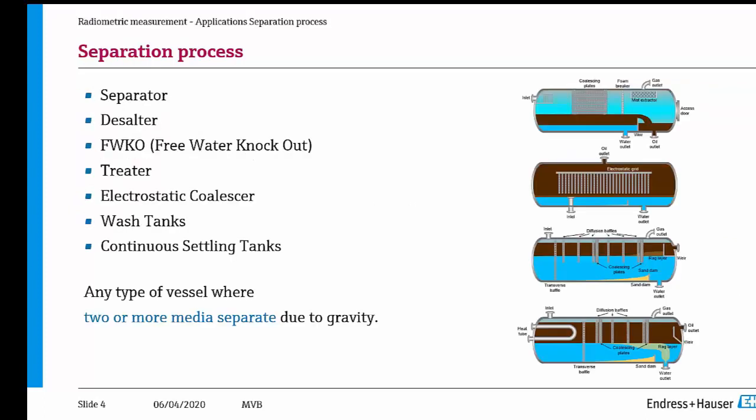If we talk about the separation process, first of all it's important to understand how the separator looks. There are certain kinds of separators — for instance a separator with a weir, which is typically completely filled from bottom to top, as well as desalters, electrostatic treaters, wash tanks, and continuous settling tanks. There are so many different names just for separation processes.